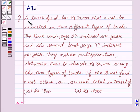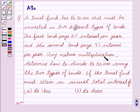Our given question is: a trust fund has Rs. 30,000 that must be invested in two different types of bonds. The first bond pays 5% interest per year and the second bond pays 7% interest per year. Using matrix multiplication, determine how to divide Rs. 30,000 among the two types of bonds if the trust fund must obtain an annual total interest of A) Rs. 1800, B) Rs. 2000.